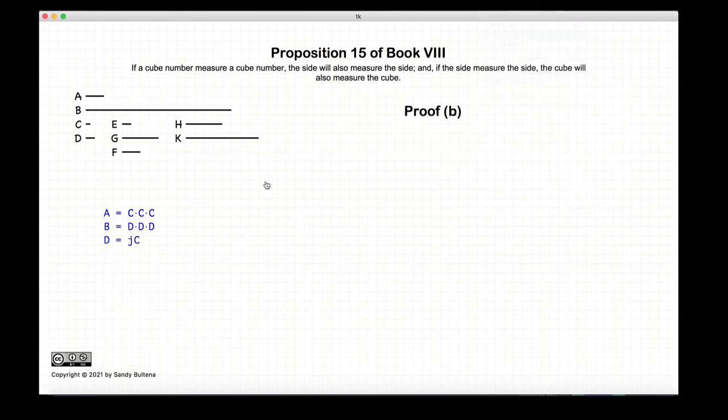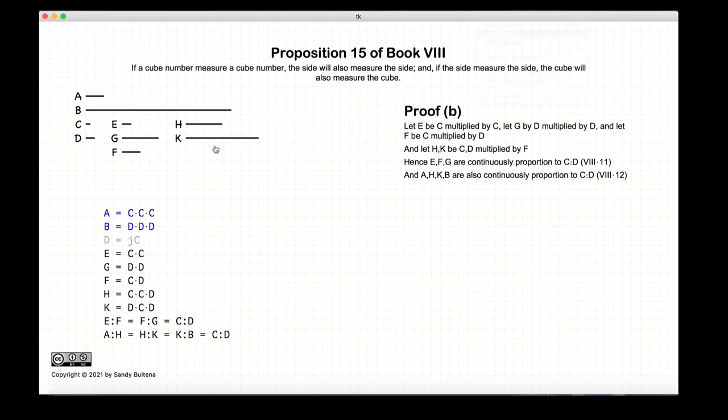And now we're going to look at the second half of the proof, where we start with that c measures d. We're going to construct the same numbers as we did in the previous part of this proposition. So we have that a is to h is to k is to b is equal to c to d, just like before.